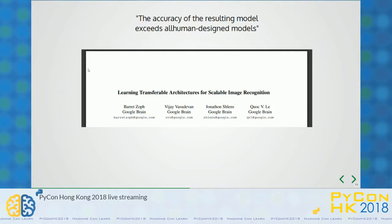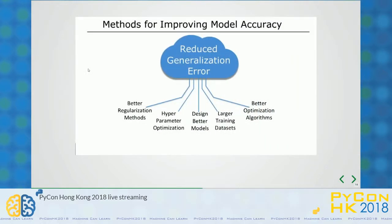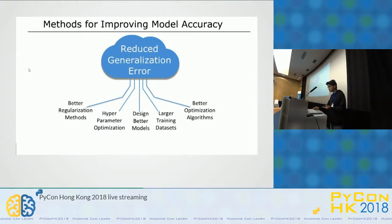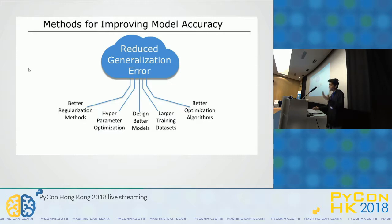They mostly talk about their mini-batch approach, where each individual mini-batch aggregates its result, and after getting the result, they try to use that on the second batch. Methods to improving model accuracy basically involve hyperparameter optimization, designing better models, and using larger training datasets. We need to reduce our losses in order to achieve maximum accuracy.